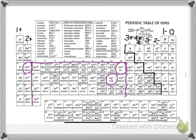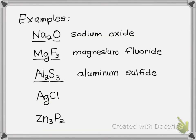So you might then want to look up silver and see that it only has one charge. So we're going to call it the silver ion and zinc only has one charge. So it will be called zinc. So this would just be silver chloride. And this would be zinc phosphide.